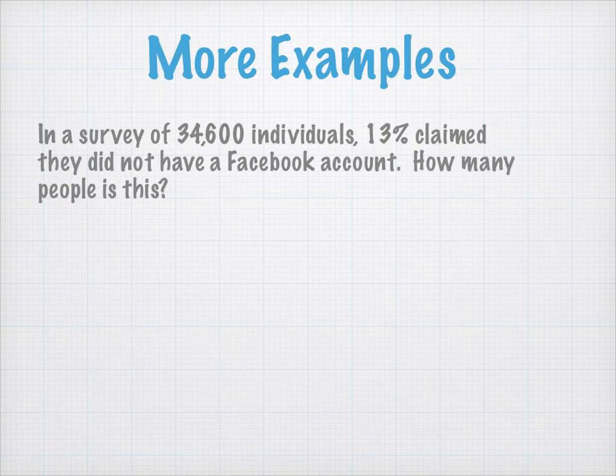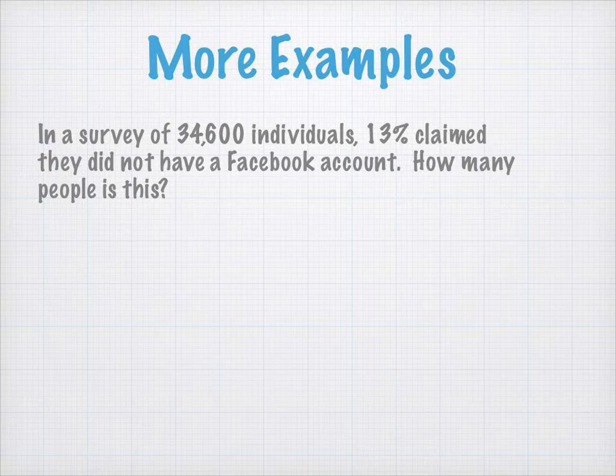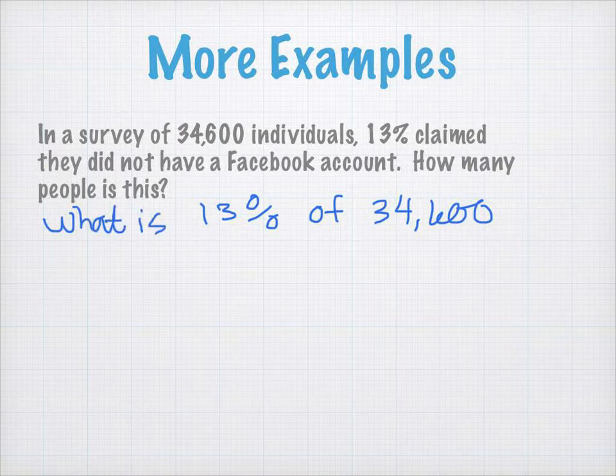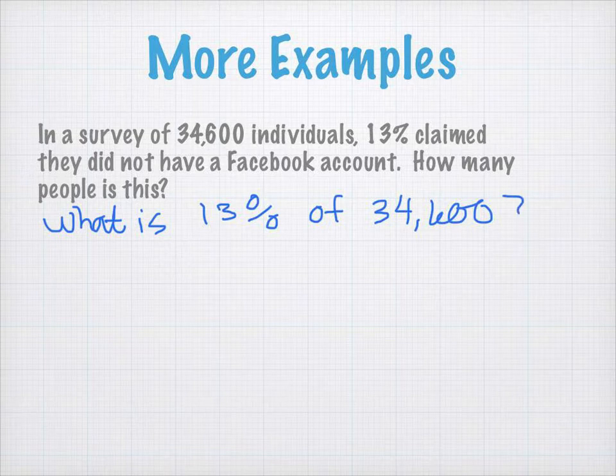Our next example says, In a survey of 34,600 individuals, 13% claimed they did not have a Facebook account. How many people is this? What we're looking for, if I were to write this out, first, just in a sentence, and then a mathematical statement, I am looking for 13% of 34,600. In other words, what is 13% of 34,600? That's just rewriting this statement. That's all I'm asking for. I'm taking this statement, and I'm writing it in just a question form, and now I can take this and write it using mathematical language.